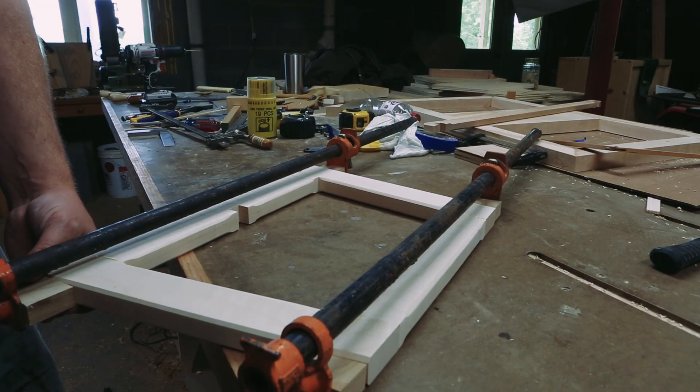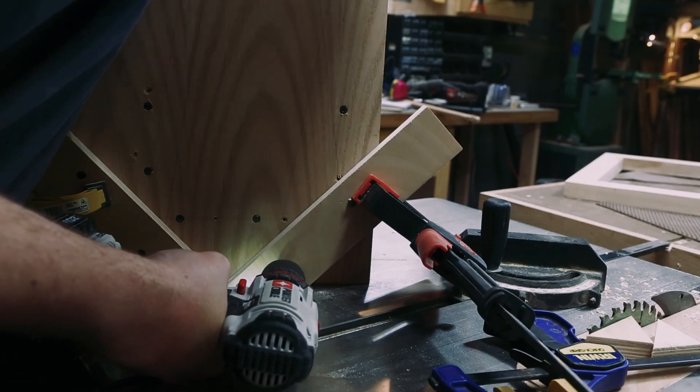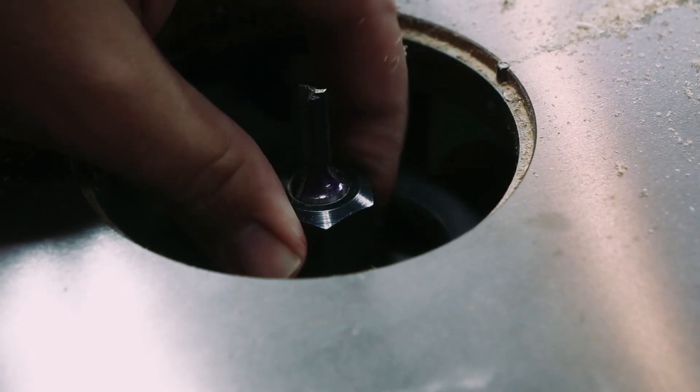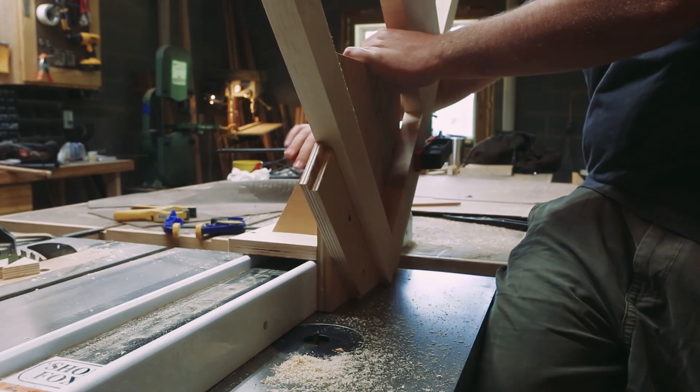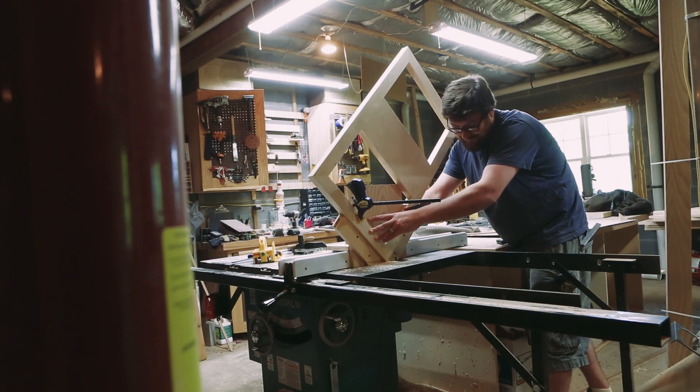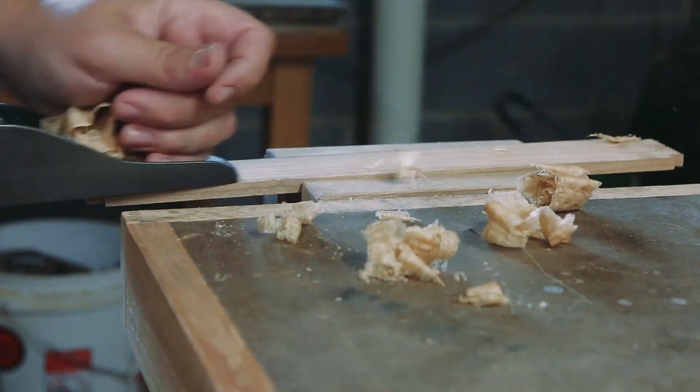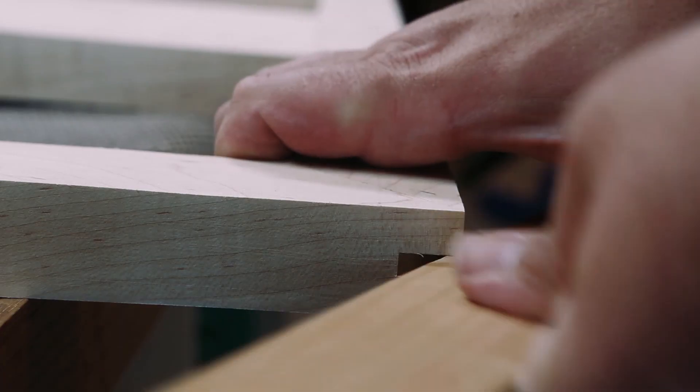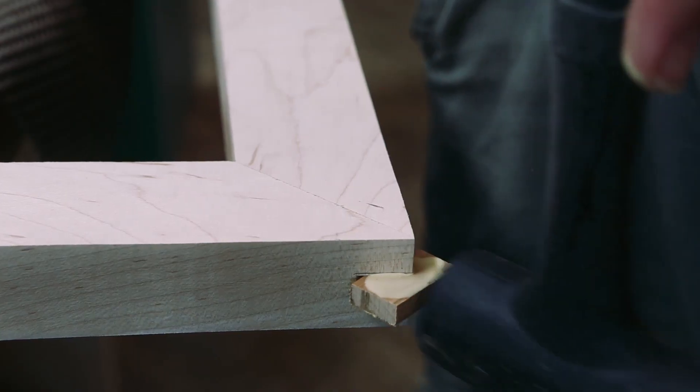I screwed in some scrap at 45 degrees to make a cradle to cut a kerf for some splines. I don't have a saw blade that leaves a flat bottom kerf, so I'm using my router with a straight bit. I had some thinner cherry laying around, so I planed it down to fit the slots, then glued them in as splines, then cut them flush once the glue is dry.